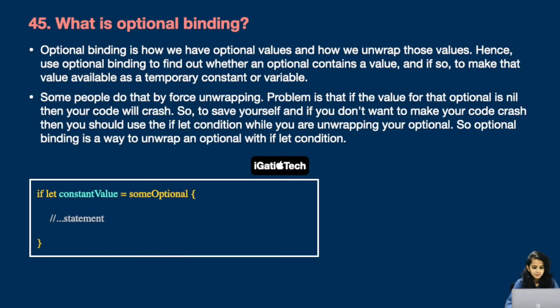Next question: what is optional binding? Optional binding is how we handle optional values and unwrap them safely. Use optional binding to find out whether an optional contains a value, and if so, to make that value available as a temporary constant or variable. Some people use force unwrapping, but if the optional is nil, your code will crash. To avoid crashes, use the if let condition while unwrapping your optional. I've written an example of this — you can check it.